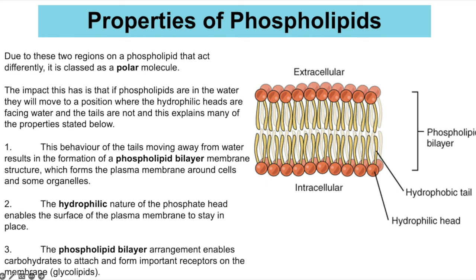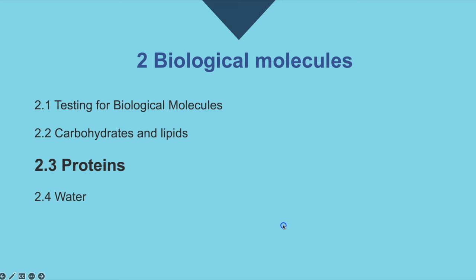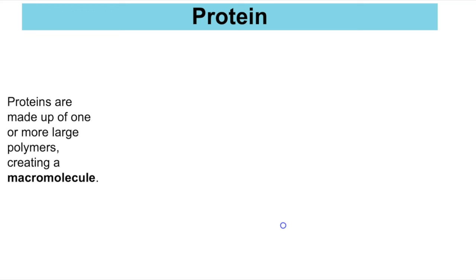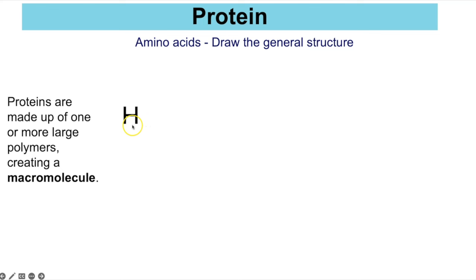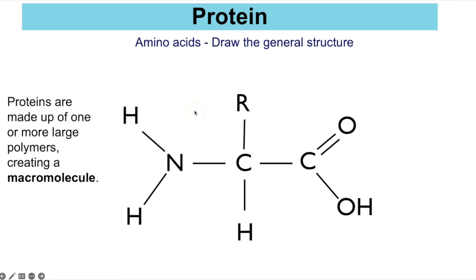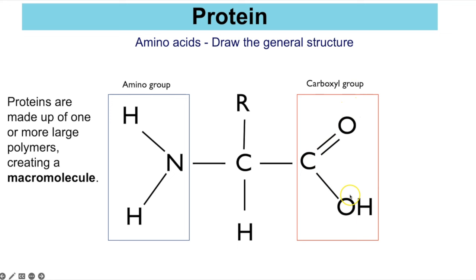Proteins are macromolecules made up of one or more large polymers. Their monomer is amino acids. The general structure of an amino acid has an amino group (–NH₂), a carboxyl group (–COOH), a central carbon, a variable R group (different in all 20 amino acids), and a hydrogen.